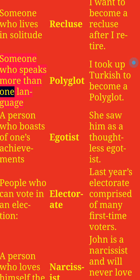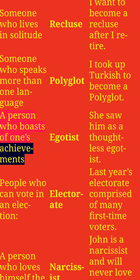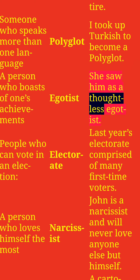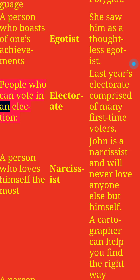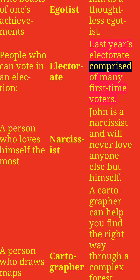Someone who speaks more than one language: Polyglot. I took up Turkish to become a polyglot. A person who boasts of one's achievements: Egotist. She saw him as a thoughtless egotist. People who can vote in an election: Electorate. Last year's electorate comprised of many first-time voters.